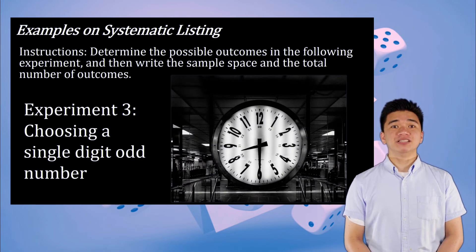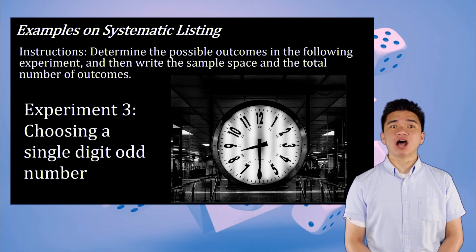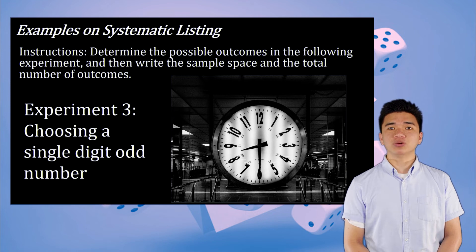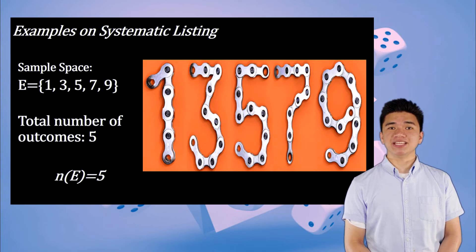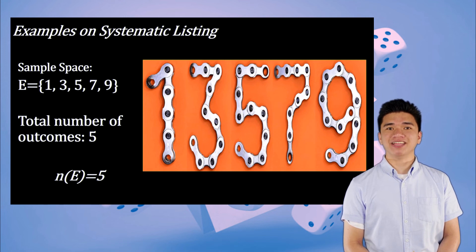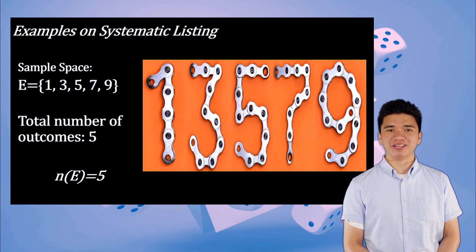Experiment 3: Determine the possible outcomes in the event of choosing a single digit odd number, then write the sample space and the total number of outcomes. The sample space is E = {1, 3, 5, 7, 9}. The total number of outcomes is N(E) = 5.